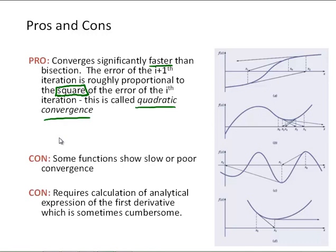One con of Newton-Raphson is that some functions show slow or poor convergence. I've got some examples of that over here on the side. Here's an example where it diverges with this function going from x0 and x1 actually gets farther away from the root. Then x2 gets even farther and eventually we're diverging.